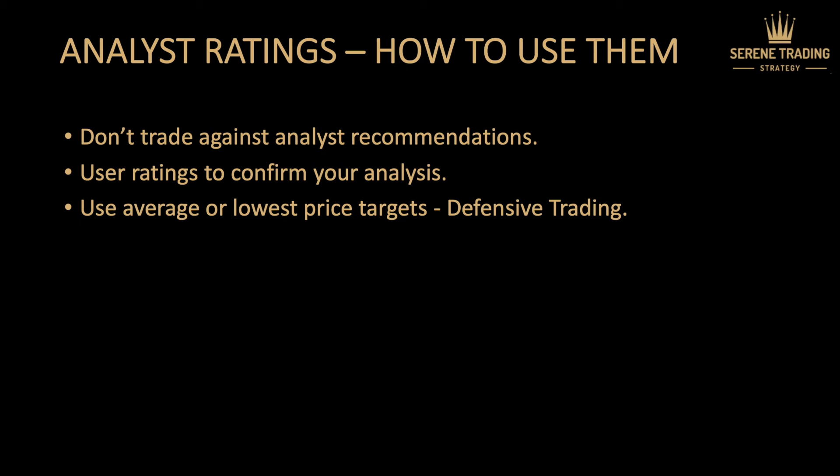I prefer to work with the average price and the lowest price because these are conservative estimates that help with defensive trading. If the lowest price target is very close to the current price, I stay away from that stock — there is very little room for it to go up. But if the lowest price target is about 30% away from the current price, I know that even if only the most pessimistic analyst is right, I'll still make a 30% gain. And if analysts drop their ratings by 5–10% over the next 12 months, I still have sufficient margin to make a profit.